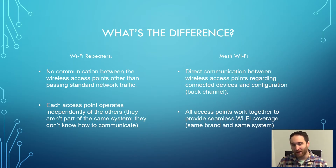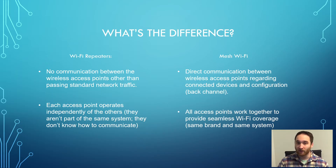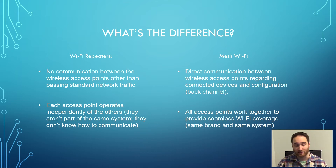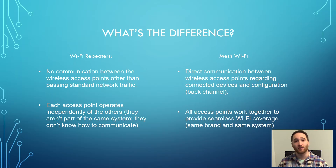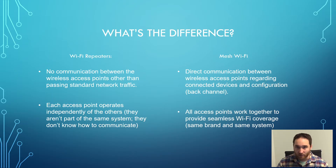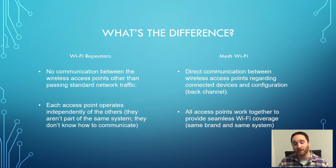What's the difference between mesh Wi-Fi and just adding Wi-Fi repeaters to your existing network? With Wi-Fi repeaters, you get no communication between the wireless access points other than passing standard network traffic through. Your main access point isn't actually aware of what your Wi-Fi repeater is doing — it has no idea how to talk to that device; it just sees it as another device on the network. Each repeater operates independently and has to be configured individually.